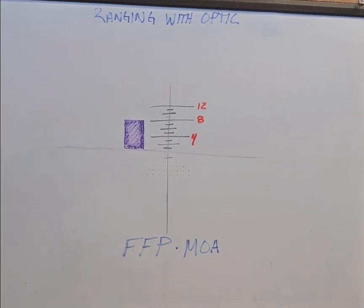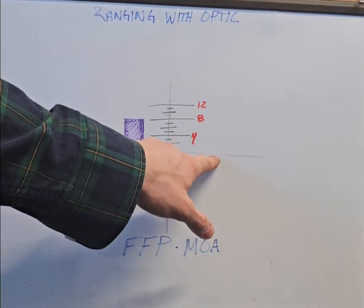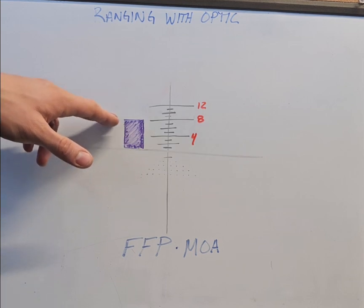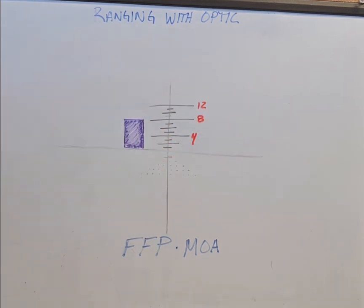Now the key factor here is just knowing the size of your target and lining it up with the zero line in your crosshairs here. The bottom of that target is going to lay on the zero. You're going to measure it up on how many minutes that is.